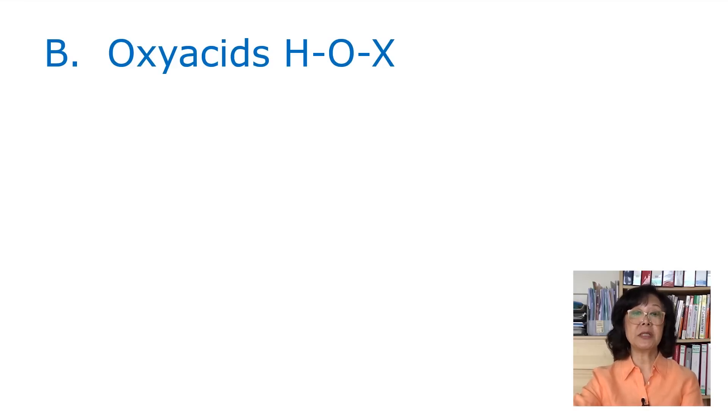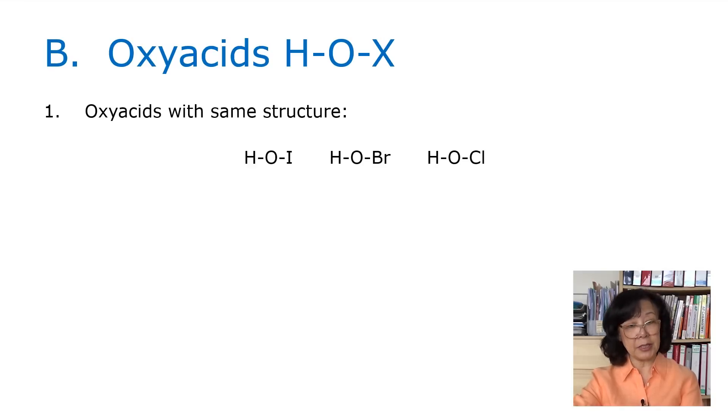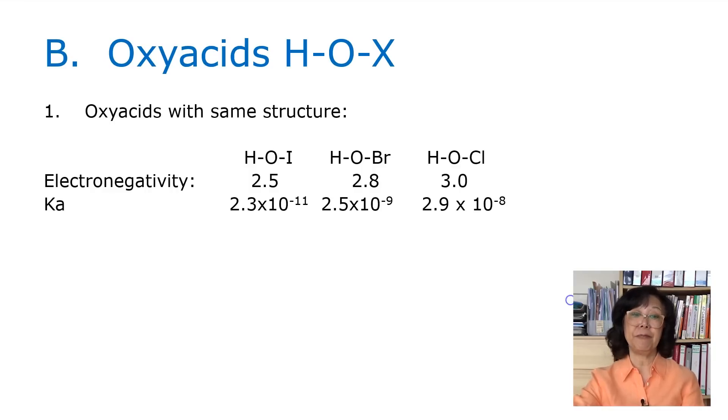The next category will be the oxyacid, HOX. Look at a bunch of them with similar structure: HOI, HOBr, HOCl. The electronegativity on the I atom is 2.5, on bromine is 2.8, on chlorine is 3.0. Remember, we have two electronegative atoms side by side, the O is also very electronegative. When we look at the Ka value, we find that it is increasing to the right, HOCl being the strongest acid in that group.